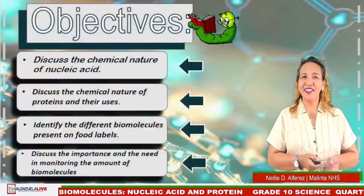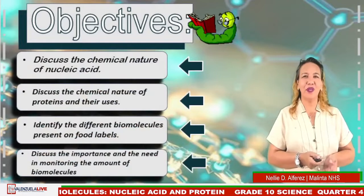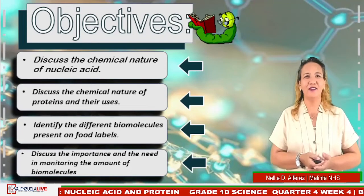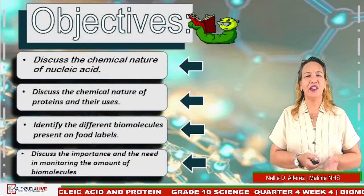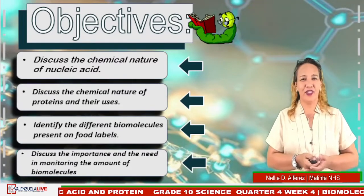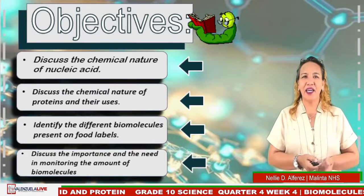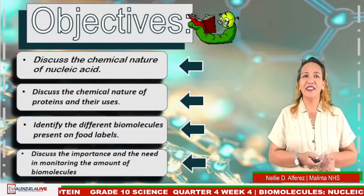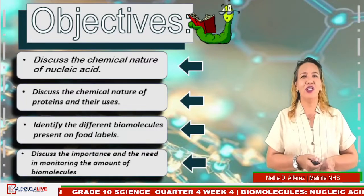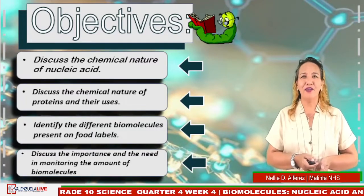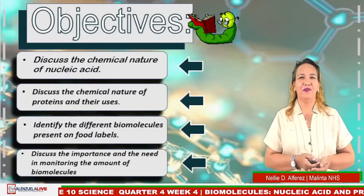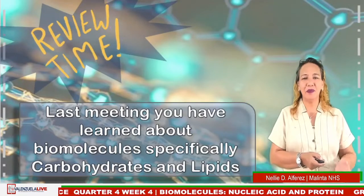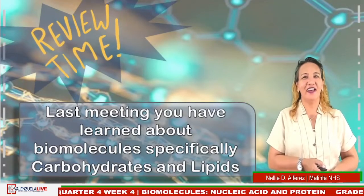For today's lesson, our specific objectives are: discuss the chemical nature of nucleic acid; discuss the chemical nature of protein and their uses; identify the different biomolecules present in food labels; and discuss the importance and the need in monitoring the amount of biomolecules. Last meeting, you have learned about biomolecules specifically carbohydrates and lipids.